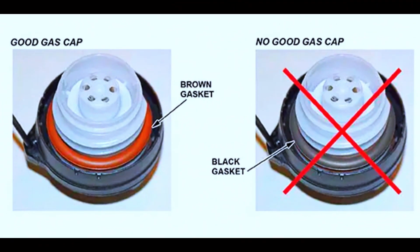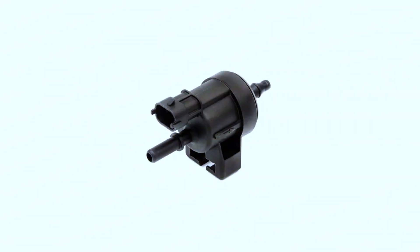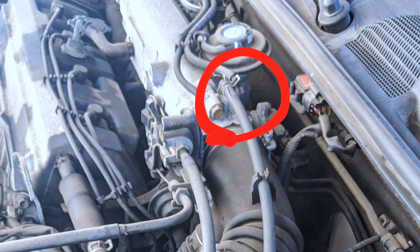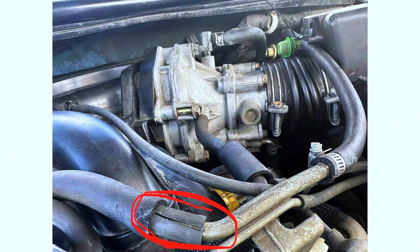A loose or faulty gas cap is the most common reason. The gas cap creates a seal to prevent vapors from escaping, and a loose or damaged cap can throw the code. A faulty purge valve can also malfunction and get stuck open or closed. Additionally, electrical problems with the purge valve wiring or leaks in the vacuum lines can also cause the code.